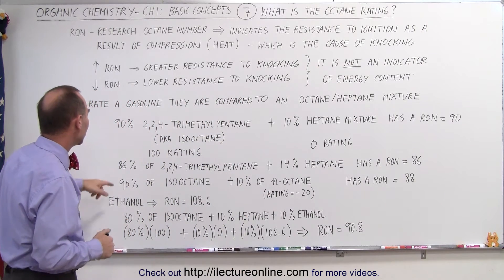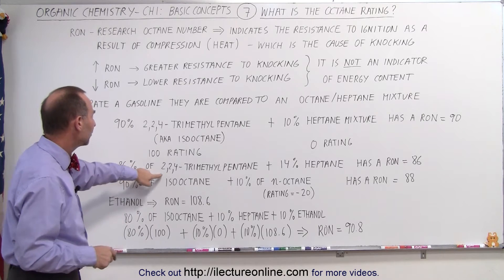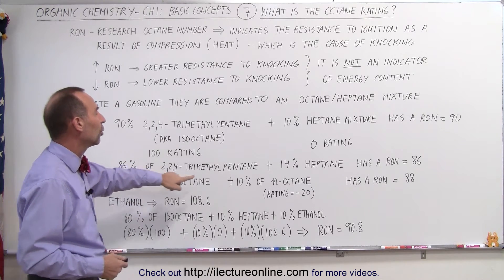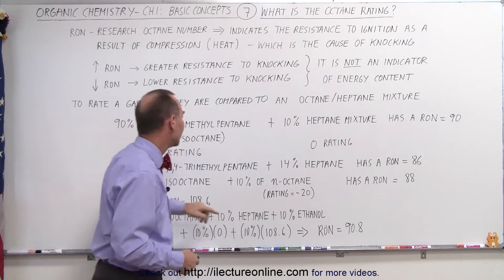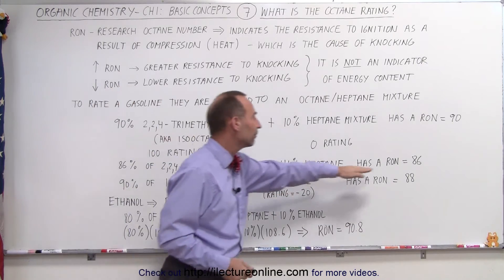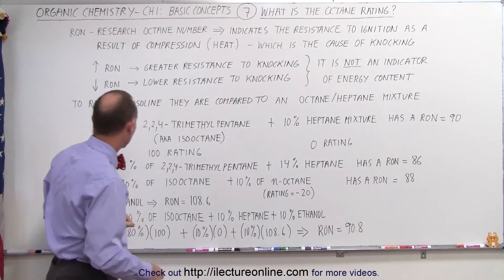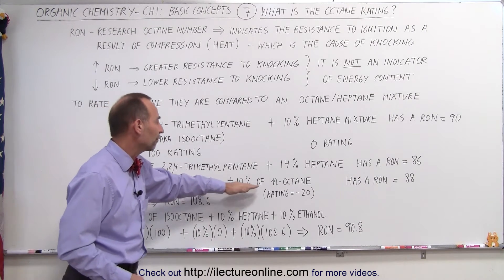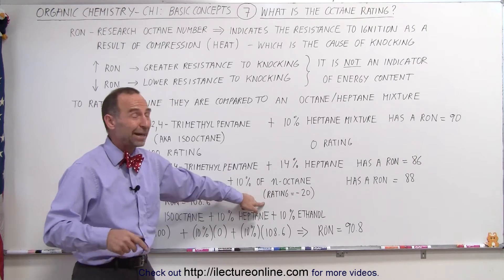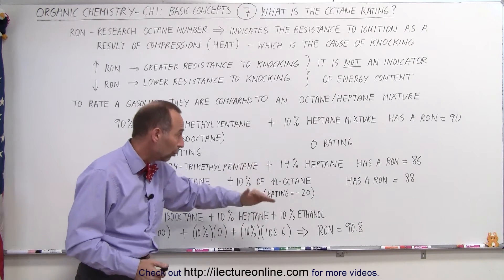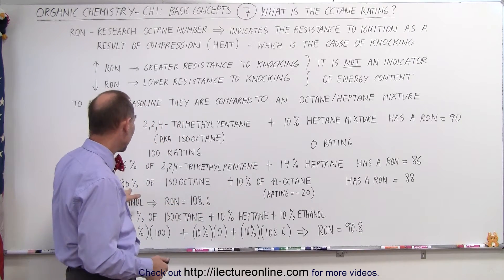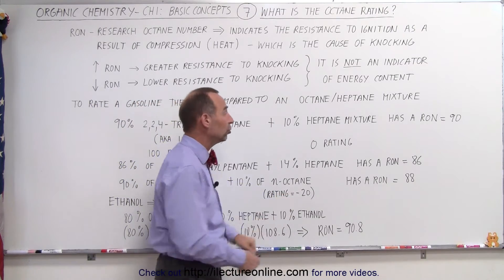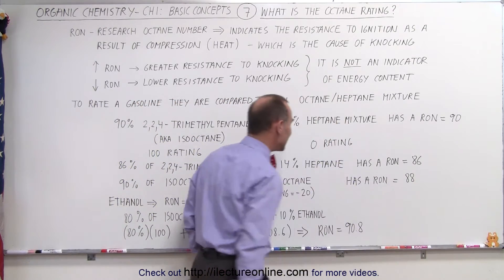For example, if you have 86% isooctane with 14% heptane, you only have an octane rating of 86. If you have a 90% mixture of isooctane and a 10% mixture of N-octane, which has a rating of minus 20, that lowers your octane rating. So 90 minus 10% of minus 20 — which is minus 2 — gives you a RON of 88.